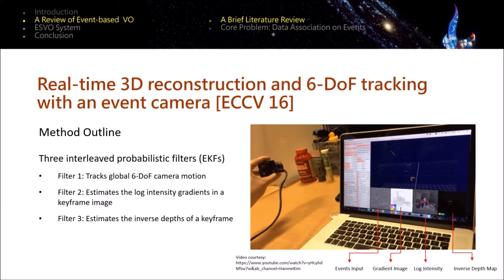The ECCV 2016 work presented by Hanme Kim et al. is the first system paper that realized event-based tracking and mapping in real-time. This work is based on assumption of brightness constancy evaluated in a log-intensity domain. Slightly different from classical design with two independent sub-problem solvers, this work consists of three interleaved probabilistic filters solving the sub-problems of tracking, mapping, and additionally log-intensity recovery.